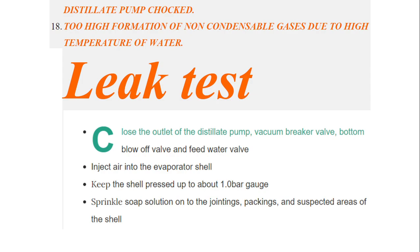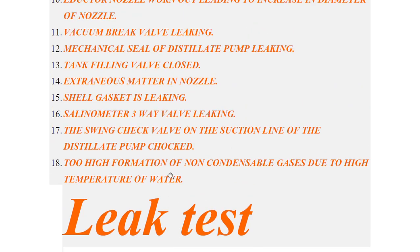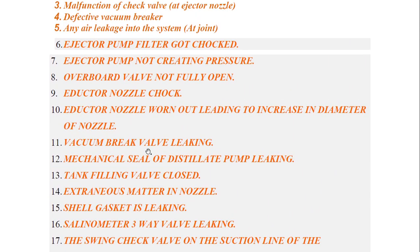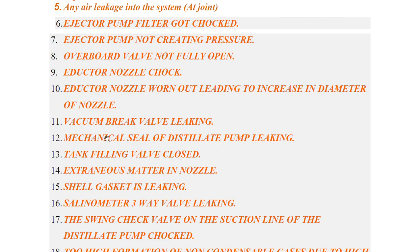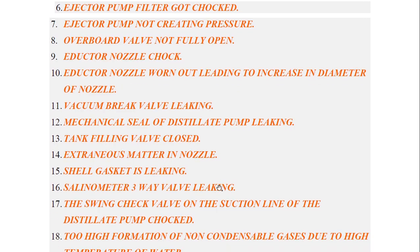Inject air into the evaporator shell — obviously we are carrying out the leak test through air, not water. We keep the shell pressurized up to about one bar gauge. We watch the reading and it should hold at one bar. Now, we sprinkle soap solution on all the jointing areas — wherever we have gaskets, joints, the vacuum break valve, filling valve — to check for leaks.